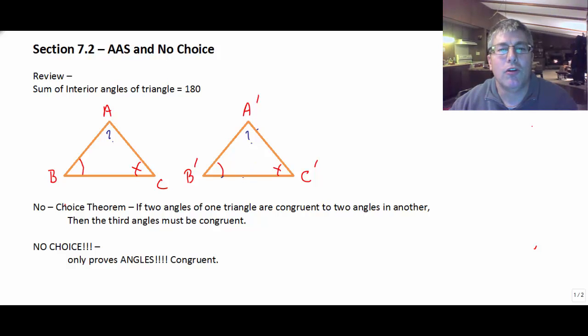This is what we call no-choice. Angle A has to be congruent to angle A' by no-choice. There's no choice but to have the same number of degrees left over because two of the corresponding angles in each of the two triangles are already congruent.